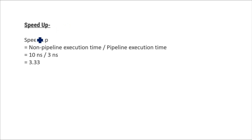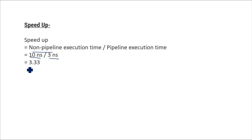Now speedup. Speedup equals non-pipeline execution time divided by pipeline execution time. Our non-pipeline execution time was 10 nanoseconds and pipeline execution time was 3 nanoseconds. So 10 divided by 3 gives 3.33. So speedup is 3.33 — meaning when we converted the non-pipeline processor to a pipeline processor, the processor has been sped up by a factor of 3.33, almost three and a half times.